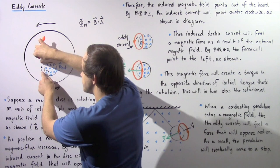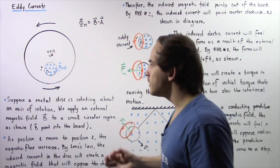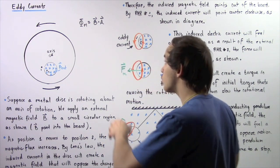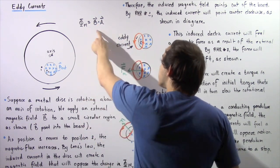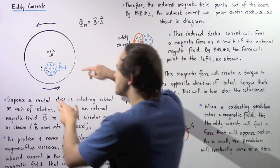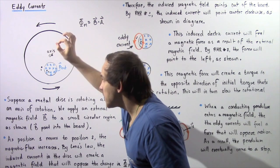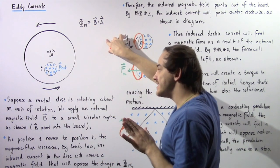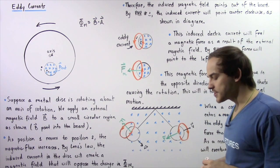Now let's choose position 1 and position 2. When a point is at position 1, the magnetic flux at that point is 0, because the magnetic field at position 1 is 0. Recall that magnetic flux is equal to the dot product of the magnetic field and area A when the magnetic field is assumed to be uniform. So at position 1, there is no magnetic flux on this point of our rotating disc. But when our point moves to position 2, there is a magnetic flux because we have an area and a uniform magnetic field B. So when our disc rotates from position 1 to position 2, there is an increase in magnetic flux.